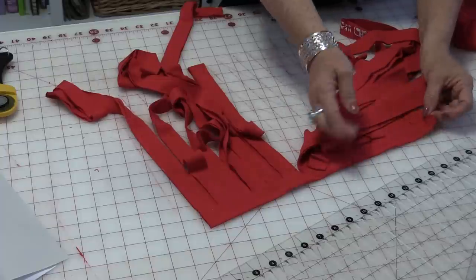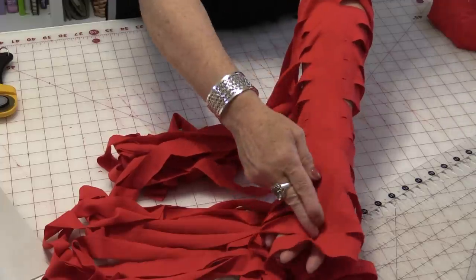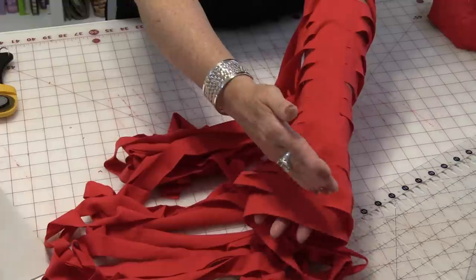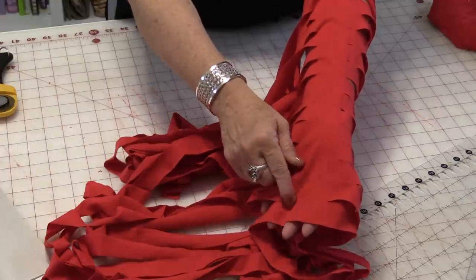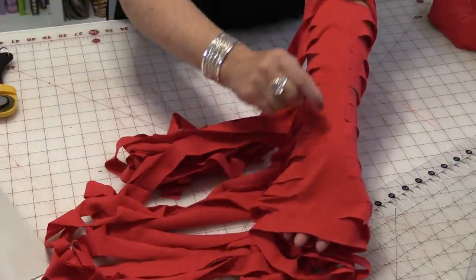Then along the edge that you didn't cut, put your arm through there. Now you're going to be able to take scissors and cut them. But you need to cut them on an angle and this is going to make one continuous strip.